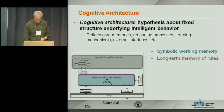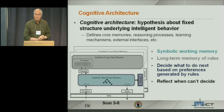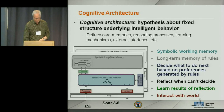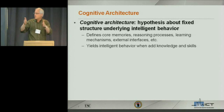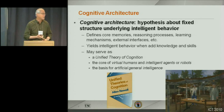SOAR consists of a symbolic working memory, a long-term memory of rules, a preference-based decision procedure that decides what operators or actions to perform, the ability to reflect on its own performance when it can't make decisions, the ability to learn from that reflection to generate new rules, and the ability to interact with the world. When you combine the architecture with knowledge and skills, you get intelligent behavior. The goal is breadth or generality. An architecture can serve as the basis for a unified theory of human cognition, virtual humans, intelligent robots, or artificial general intelligence.